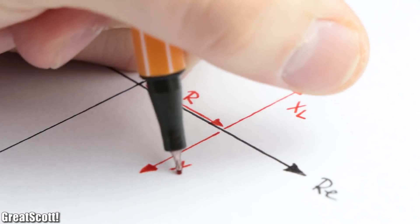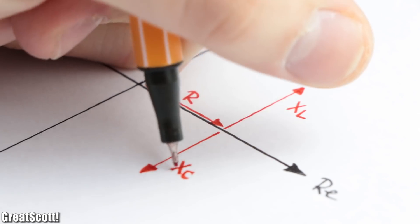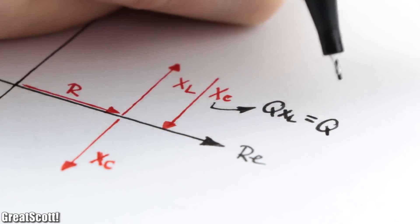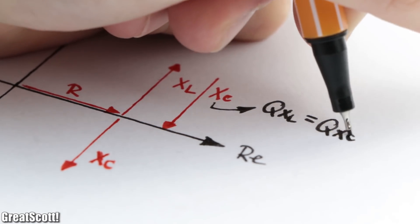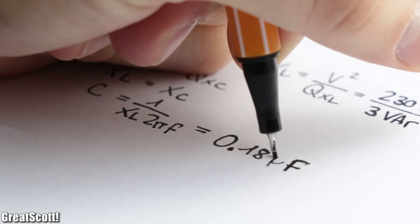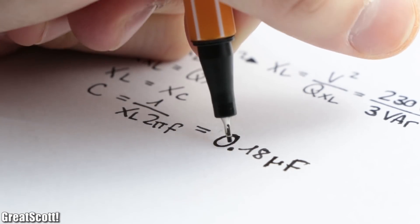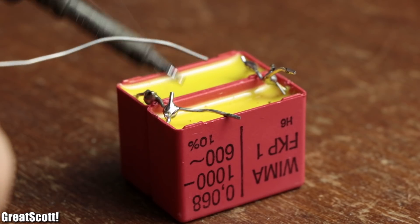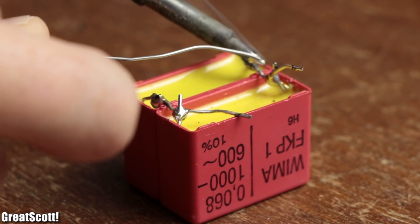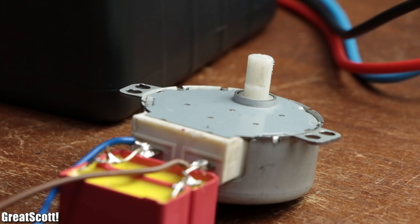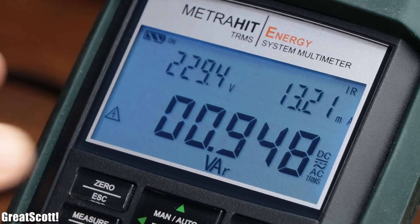And since we know from the previous basics episode that inductors and capacitors basically oppose each other, we would only have to draw the same reactive power with the capacitor as the inductor to get rid of it all. So I did a small calculation to find out that I would need a 0.18 µF capacitor to cancel out the inductive reactive power. The closest one I got though were two 0.068 µF capacitors in parallel which I hooked up to the motor in order to find out that we successfully decreased the reactive power to one third of the original value.